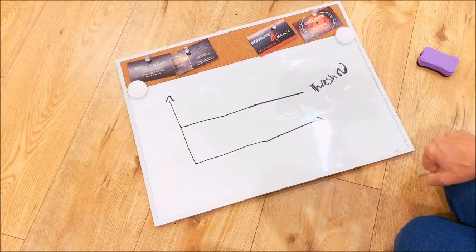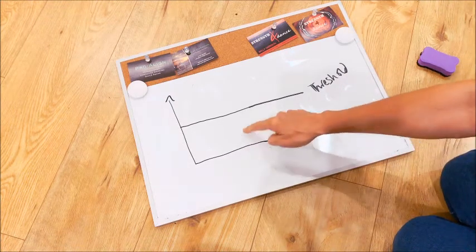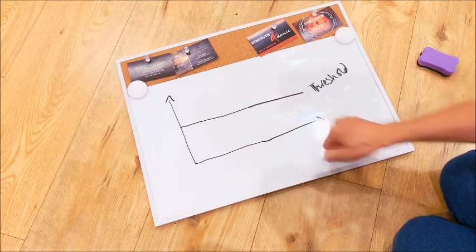What this is representing here is a tissue tolerance line or threshold. So when we put load into a tissue, when we get to a certain point, the tissue won't be able to cope anymore.